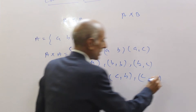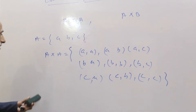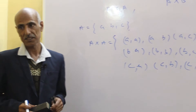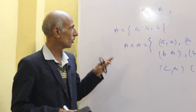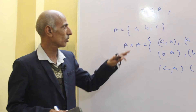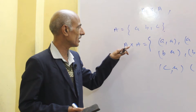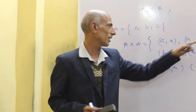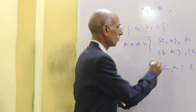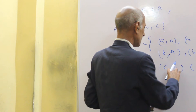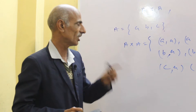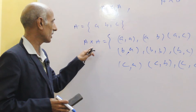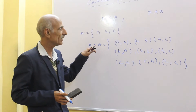I am putting the symbol of a set here, which means the Cartesian product of two sets is itself a set. The elements in the Cartesian product set are: (a,a), (a,b), (a,c), (b,a), (b,b), (b,c), (c,a), (c,b), and (c,c). These are the elements of the Cartesian product of set A with itself.